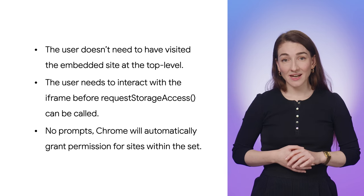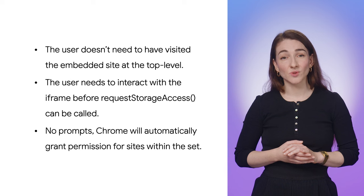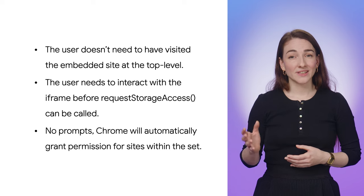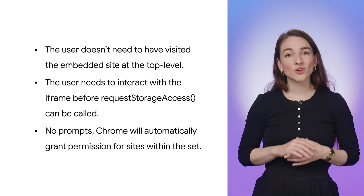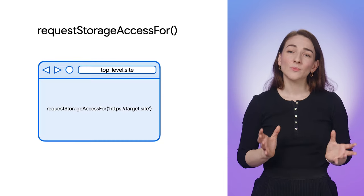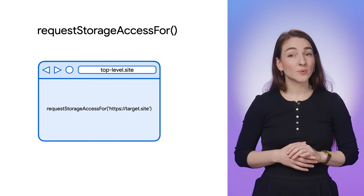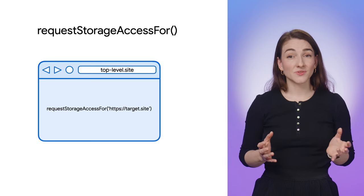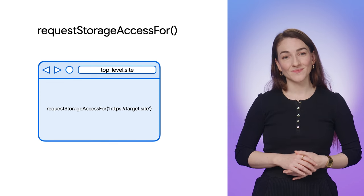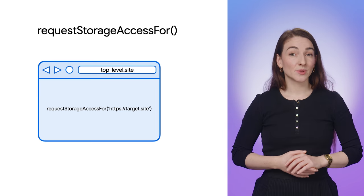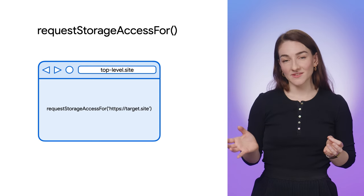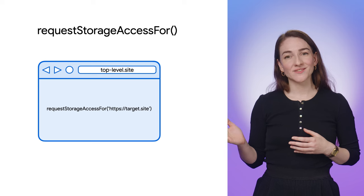With just Storage Access API, requesting storage access will present users with a prompt to either allow or deny access. If related website set is enabled, Chrome will automatically grant permission for sites within the set. Because requestStorageAccess can only be called from within an iframe, it poses challenges for top-level sites that use cross-site images or script tags requiring cookies. To address this, Chrome has implemented a way for top-level sites to request storage access on behalf of specific origins with requestStorageAccessFor.